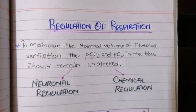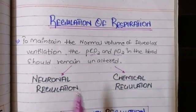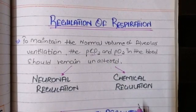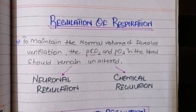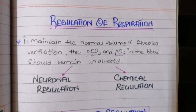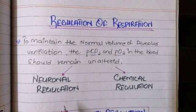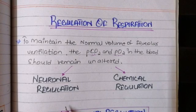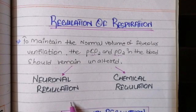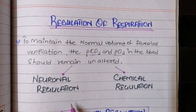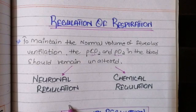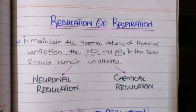This happens through two mechanisms. Number one is the neuronal mechanism, and number two is the chemical regulation. The neuronal mechanism uses the respiratory centers located in the medulla, including the ventral respiratory group, the dorsal respiratory group, and the pneumotaxic centers. These three centers, or groups of neurons, are important and they are stimulated when there is an increase or decrease in alveolar ventilation.